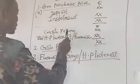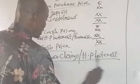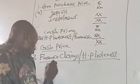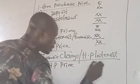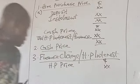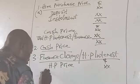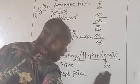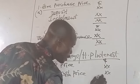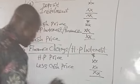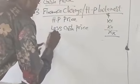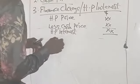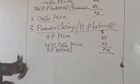The formula is: Finance Charge equals Hire Purchase Price less Cash Price. When you deduct the Cash Price from the Hire Purchase Price, you get the Hire Purchase Interest. Another word for Hire Purchase Interest is Finance Charge.